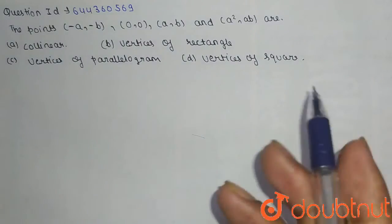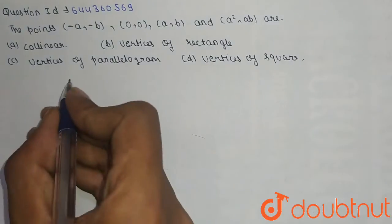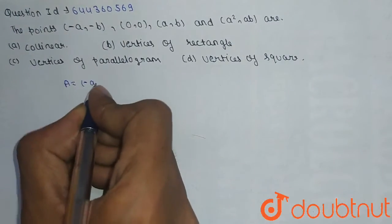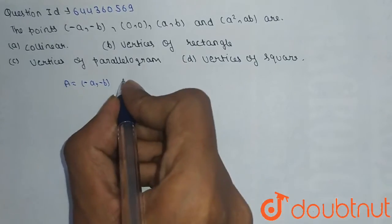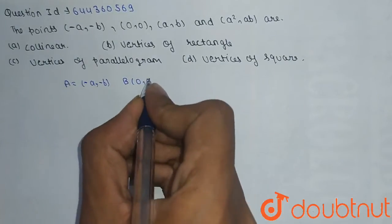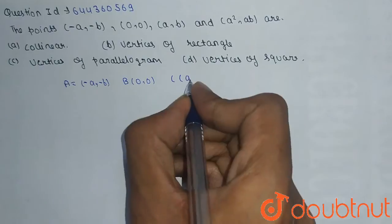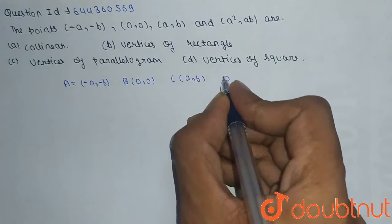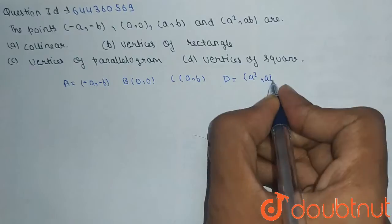So let's suppose A = (-a, -b), B = (0, 0), C = (a, b) and D = (a², ab).